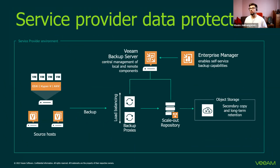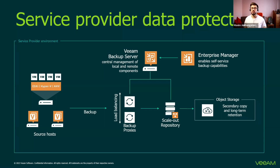Now let's speak about the service provider data protection. Here we have source hosts — this could be ESXi, Hyper-V, AHV. IT Global supports VMware infrastructure, which is included in the offering. Hyper-V is usually a bit more of a tailored solution than VMware. VMware gives more flexibility and works in a much more efficient way. Here we have Veeam Backup and Replication and proxies connected to the hypervisor, giving you load balancing capabilities. We have scale-out backup repositories and object storage if needed. There is also a self-service portal, which is a web UI — another component called Enterprise Manager, which enables self-service backup capabilities.